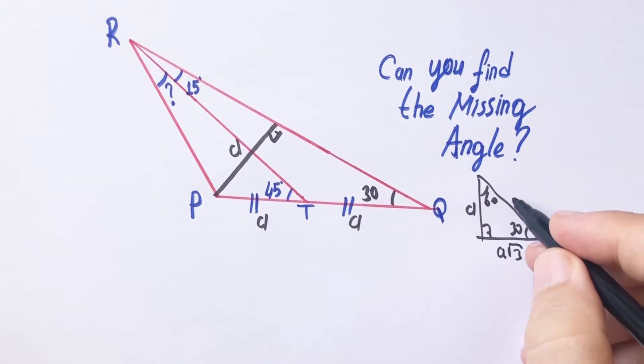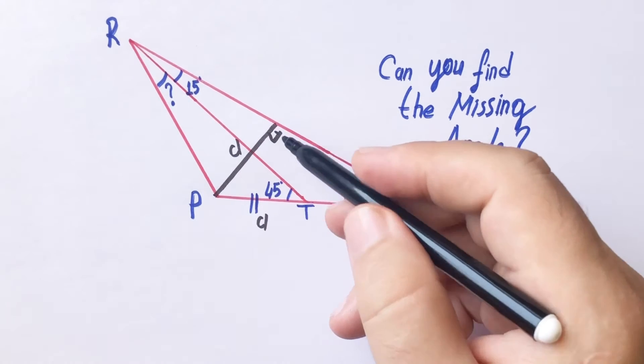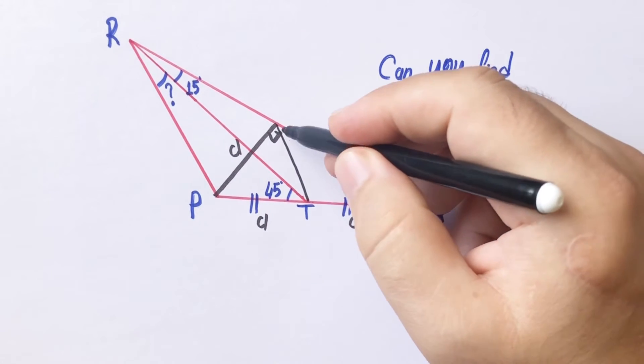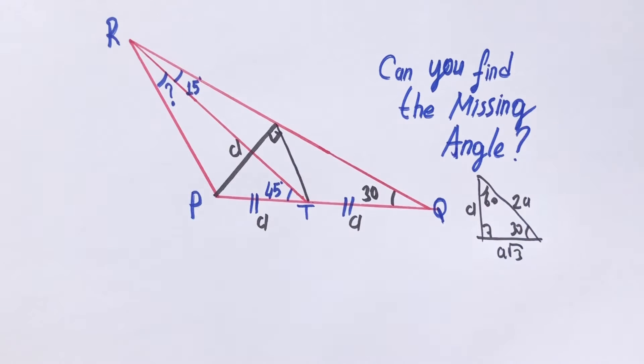This length must be a root 3 and the hypotenuse must be 2a. Therefore here is a units. Let's connect here. Let's find its angle. If the apex angle is 90 degrees and the base is divided into two equal parts like this, this length must be equal to the others.